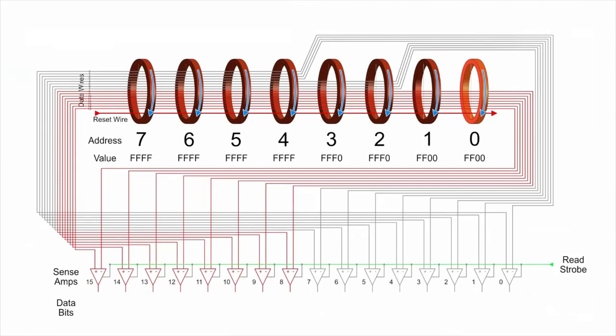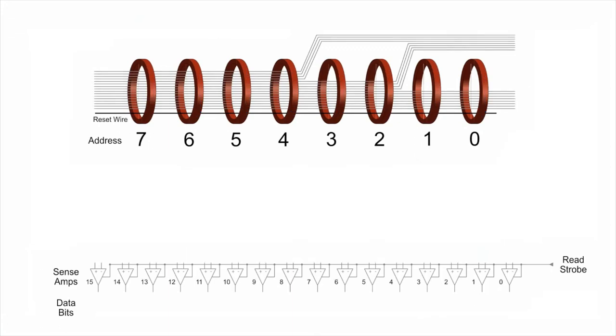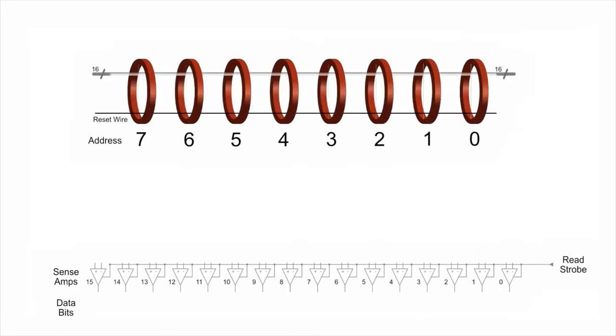If we strobe the sense amplifiers just at the right time, we will catch the pulses and read memory location 0, all 16 bits at a time. But the Apollo engineers went further. Let's redraw our 16 data wires as one single bundle called a strand. Although the bundle line is drawn going through the middle of all cores, use your imagination to picture that some of the wires actually go around the cores, just as before.